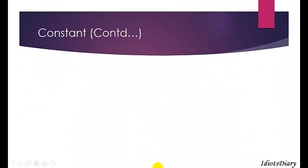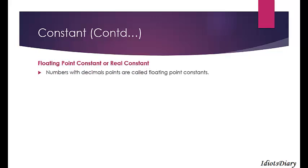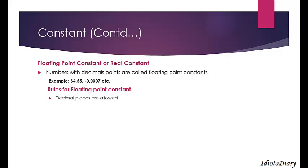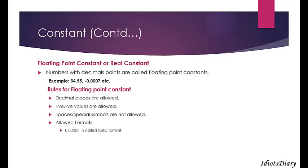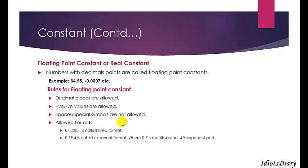The next type of scalar constant is the floating point constant. For example, 34.55 and -0.0007 are valid floating point constants. Rules: decimal places are allowed; positive and negative values are both allowed; spaces and special symbols are not allowed. Two formats are allowed: fixed format (e.g., 0.0007) and exponent format (e.g., 0.7e-4, where 0.7 is the mantissa and -4 is the exponent). The valid range for floating point constants is 1.2e-38 to 3.4e+38.